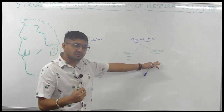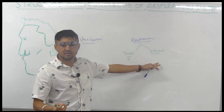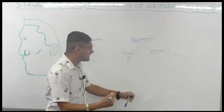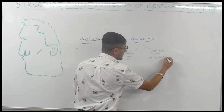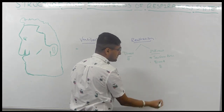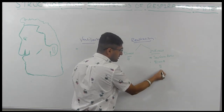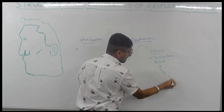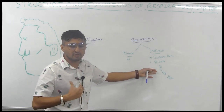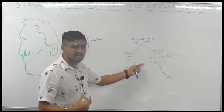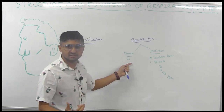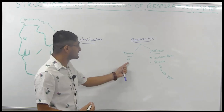Indirect respiration means that in order for oxygen to get to the tissue, it has to be carried by something else — in the human body, it has to be carried via blood. The oxygen passes through a surface area, gets carried by blood, and then from the blood it goes to the tissue. Direct respiration doesn't require blood and is present in organisms like sponges and ringworms.